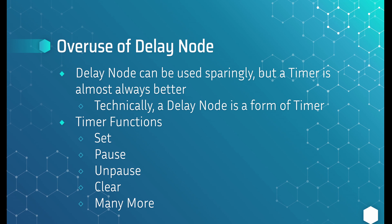The next common mistake I see is the overuse of the delay node. Delay nodes can be used sparingly — I use them when there's not something better or when I'm just trying to prototype something quickly — but in almost every situation a timer is going to be better. Technically, if you look under the hood, a delay node is just a timer programmed in C++. One of the problems with a delay node is that once you start it you have no control over it — it's going to finish every single time. Whereas a timer has lots of other functionality: you can set, pause, unpause, or clear a timer. The delay, once it starts, is going to finish and there's nothing you can do to stop it.